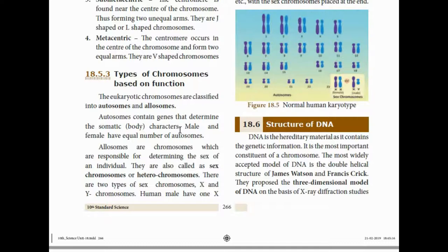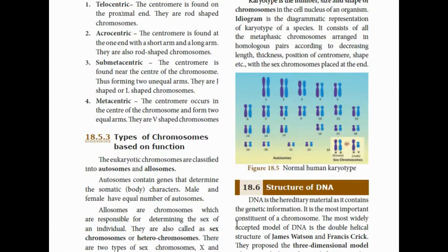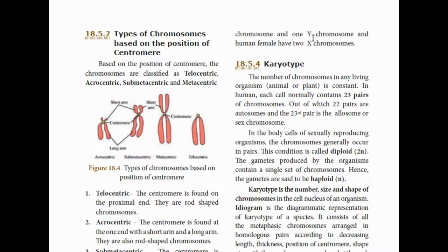One type is autosomes, and the other is allosomes. Allosomes carry the genes required for body characters, but specifically they determine the sex of an individual. That is why the chromosome is called an allosome. These are also called sex chromosomes or heterochromosomes. There are two types of heterochromosomes: X and Y chromosomes. Males have one X chromosome and one Y chromosome. Females have two X chromosomes.